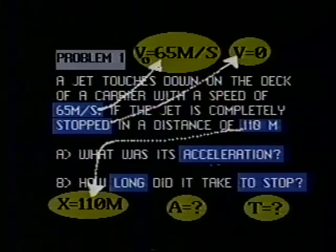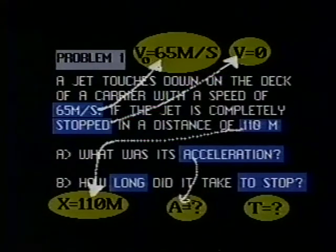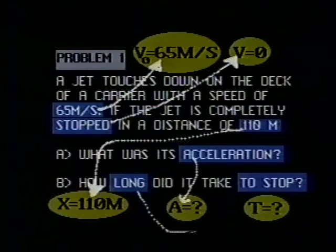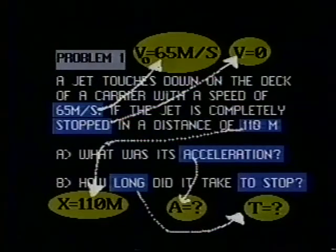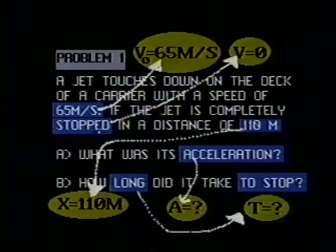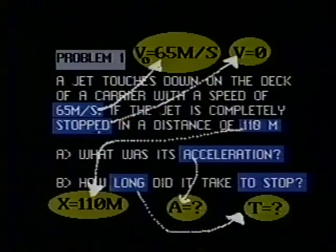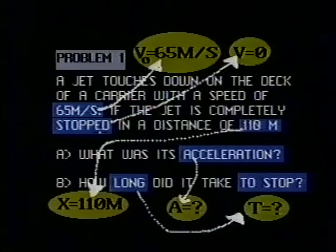What was its acceleration? That's pretty obvious. What's A? How long did it take to stop? That's also pretty obvious. That's the quantity T that we want. You should try to do this on each problem. Students sometimes have trouble with something like this. If the jet is completely stopped, it does not say in the problem that the final velocity is equal to zero. That's an assumption that you have to make.